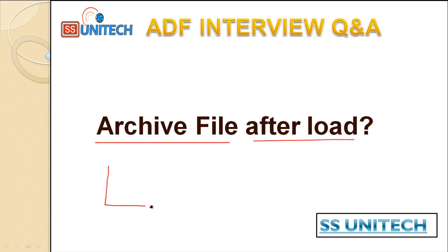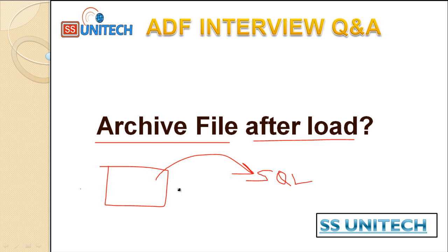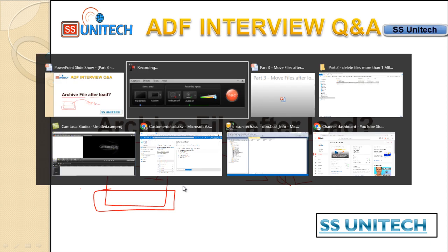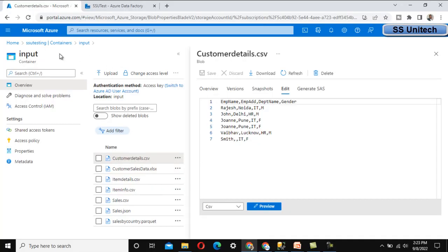Here, for example, we have a source which is a CSV file in blob storage. First, we want to load that data from the CSV file to SQL Server. After loading the file into SQL Server, we want to archive this file. We also have another folder on the same blob storage where we will keep that file.